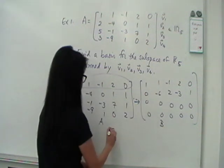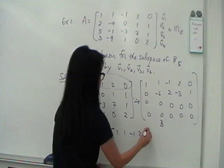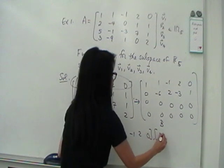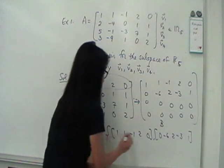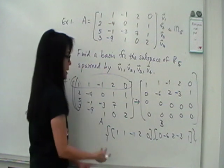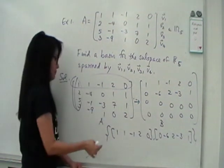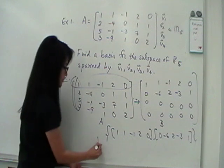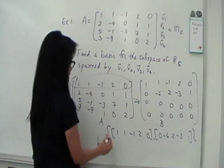So we ended up with these two. This will span the subspace. Obviously, these two are linearly independent. So therefore, this is a basis for the row space of B. What I'm saying is this vector is 1, 1, -1, 2, 0, and 0, -6, 2, -3, 1. And this will form a basis, this set will form a basis for B, the row space of B. But because of the theorem, this will also form a basis for the row space of A.